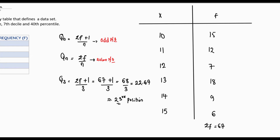We are going to sum the frequency to locate the 23rd position. 15 plus 12 gives us 27, so 23 is going to be somewhere inside that second row. When we point this towards the score, we can see that the frequency of 12 is pointing towards 11. So our third quartile Q3 is equal to 11.